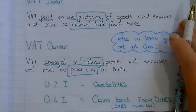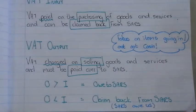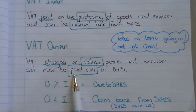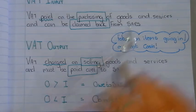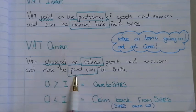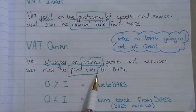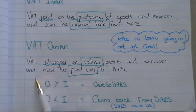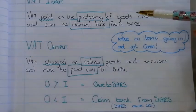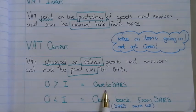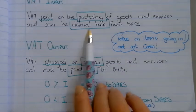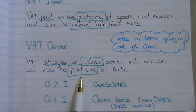How does it work — when do you owe SARS or can you claim back? Output VAT must be paid over to SARS. If your output VAT is more than your input VAT, you owe SARS money. But if your input VAT — what you can claim back — is more than your output VAT, then SARS owes you money.